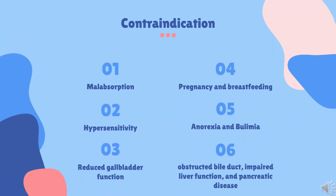Contraindication. Orlistat is contraindicated in malabsorption, hypersensitivity to Orlistat, reduced gallbladder function (e.g., after cholecystectomy), pregnancy and breastfeeding, and anorexia and bulimia. Use caution with obstructed bile duct, impaired liver function, and pancreatic disease.